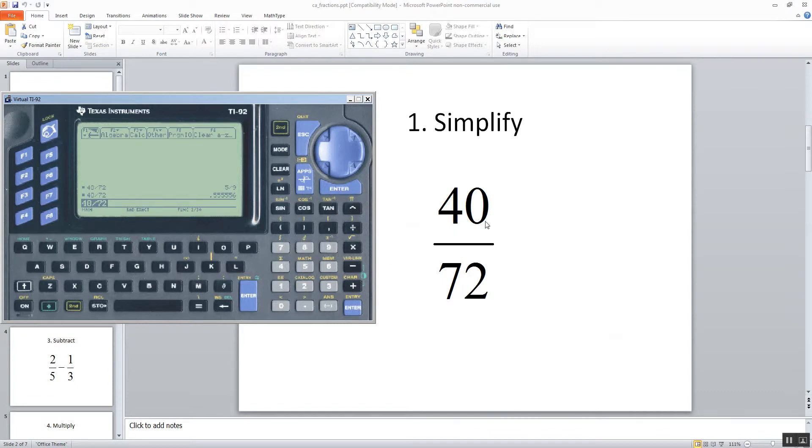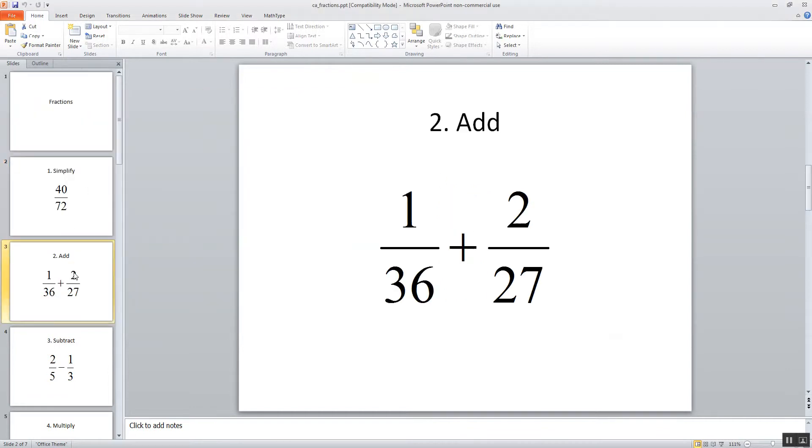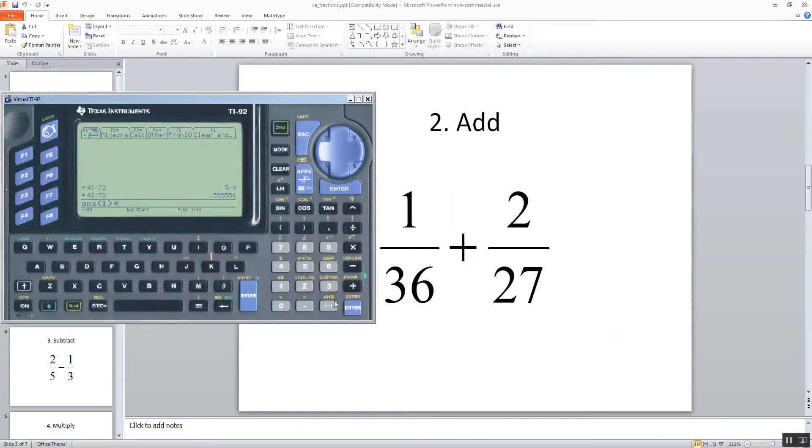Now we already looked at this one. That reduces to 5 9ths. Let's take a look at these two fractions together. So I'm going to do 1 divided by 36 plus 2 divided by 27 and push enter. And it gives us 11 over 108. Adds it, simplifies it. Does everything.